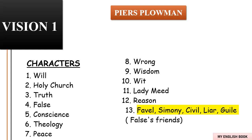The mouse adds that even if the cat were out of the picture, the rats wouldn't be able to effectively rule themselves. The rats disappear and Will finds himself once again observing a field full of folk, where he meets a beautiful woman named Holy Church. She teaches Will a number of lessons, most of which center on Truth — a representation of God as creator of mankind. Will desperately wants Holy Church to teach him how to save his soul and how to recognize evil.